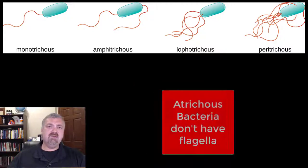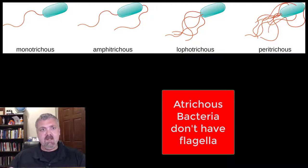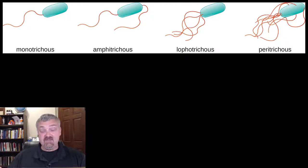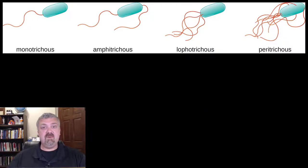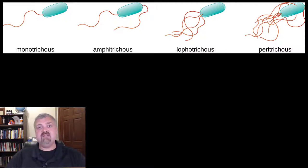The first group you actually don't see here is called atrichous. Bacteria that don't have a flagella would be atrichous. All bacteria that have flagella are either going to be polar or peritrichous. Polar just means on one or both ends you would see the flagella.